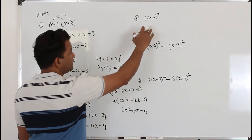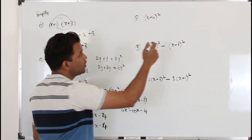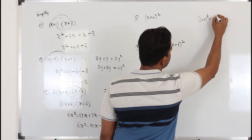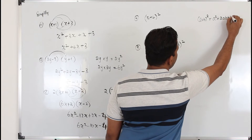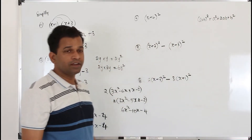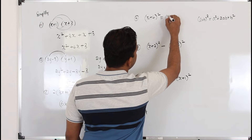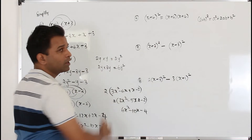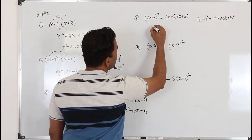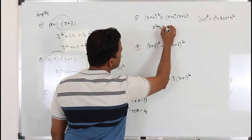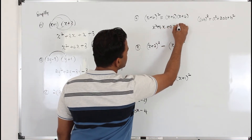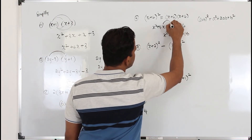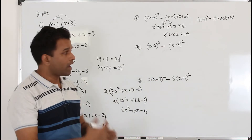Here you have a square. You can apply the algebraic identity: (a+b)² = a² + 2ab + b². If you know this identity, use it. If not, it's simple — write it as (x+4)(x+4) and multiply. Take x and multiply both: x square plus 4x. Take 4 and multiply both: 4x plus 16. You get x square plus 8x plus 16, because 4x plus 4x are like terms.